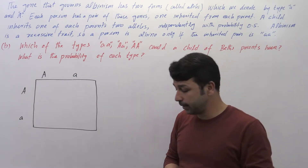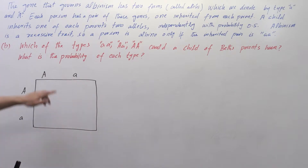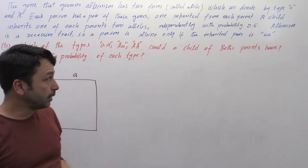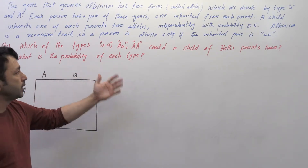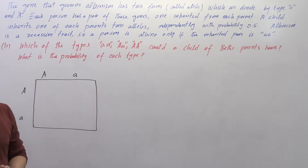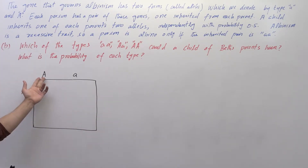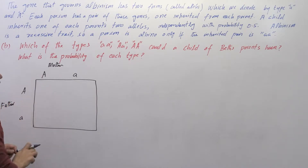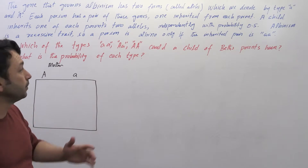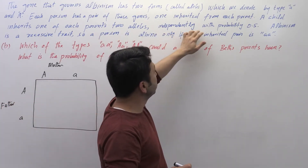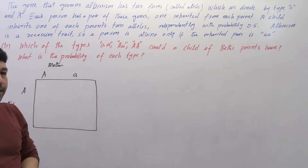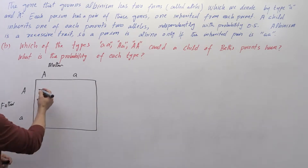Let's come to the second part of the question, Part B: which types — both capital 'AA', capital 'A' small 'a', and both small 'aa' — could a child of Beth's parents have? And what are the corresponding probabilities of these types? From the last part, we know each parent has type capital 'A' small 'a'. Let's say parent 1 is the mother and parent 2 is the father. From the information given, each allele can combine independently with probability 0.5, meaning capital 'A' and small 'a' are equally likely.